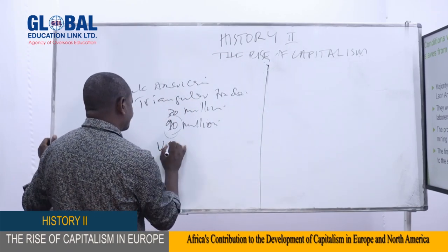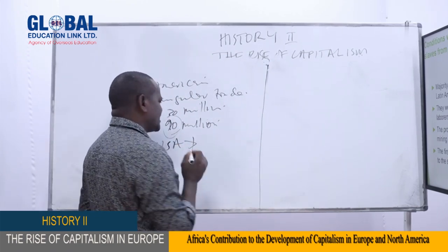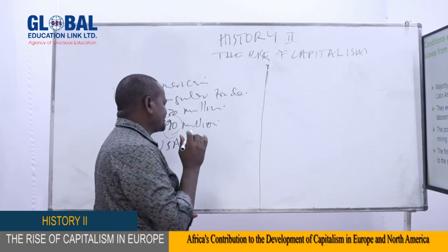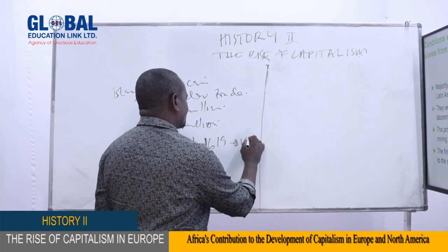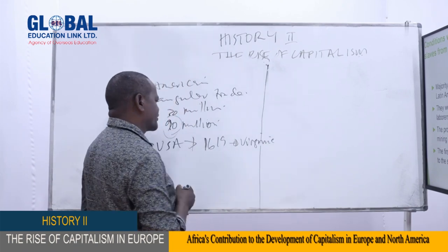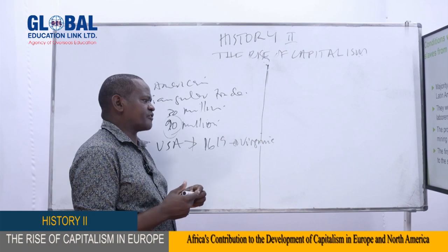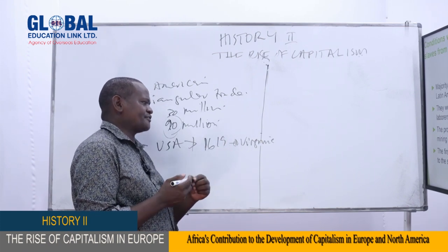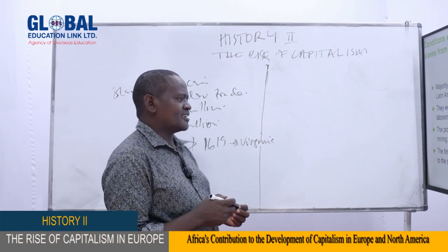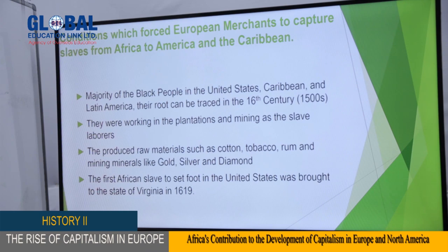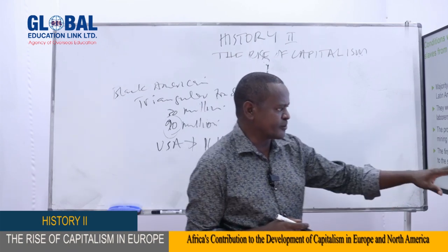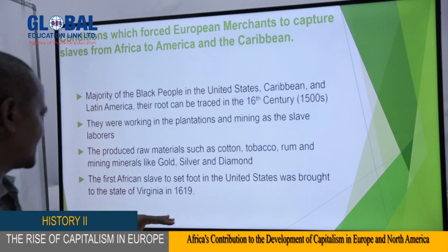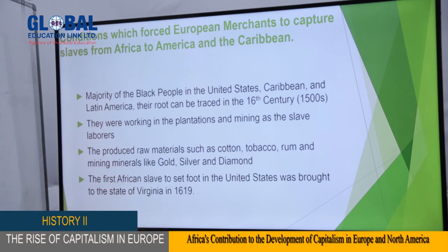The first black people to reach what is called today the USA set their foot in America in 1619 in the state of Virginia. This first group of black Americans was brought there by the British after a British ship attacked a Portuguese ship that was scheduled to go to Veracruz in Mexico. Those people were taken and brought to Virginia, and that marked the beginning of slavery in the United States of America.